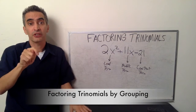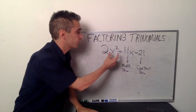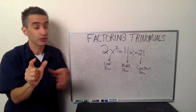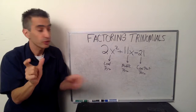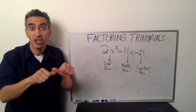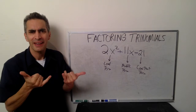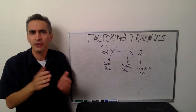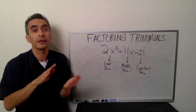Now it's time to study factoring trinomials. Three terms — that's a trinomial. Notice the lead term, 2x squared, and the middle term, 11x, and the constant term on the end, negative 21. Now, how are we going to factor this whole expression? We're going to use the grouping method.